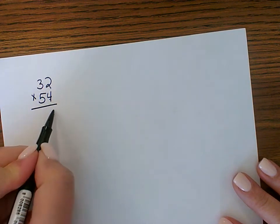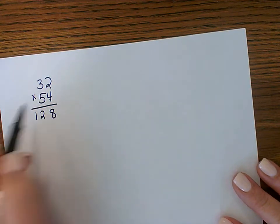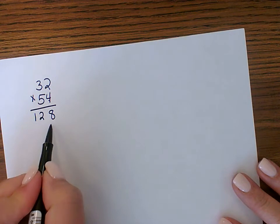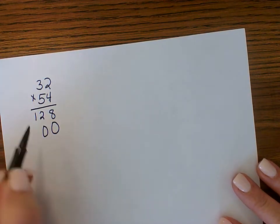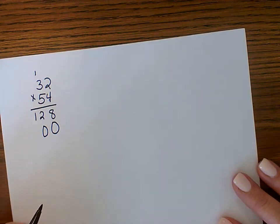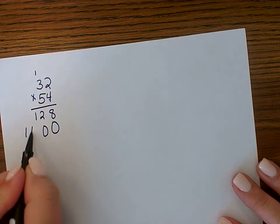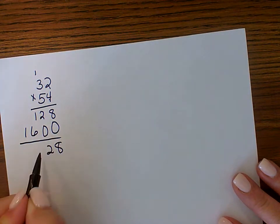4 times 2 is 8. 4 times 3 is 12. Remember you're multiplying by 50, not 5, so add a 0 here. 5 times 2 is 10. Carry the 1. 5 times 3 is 15. Plus 1 is 1600.